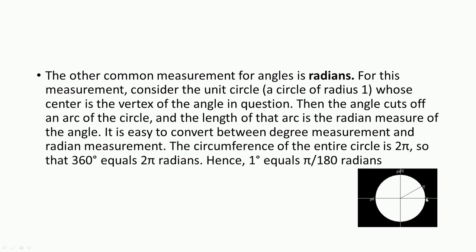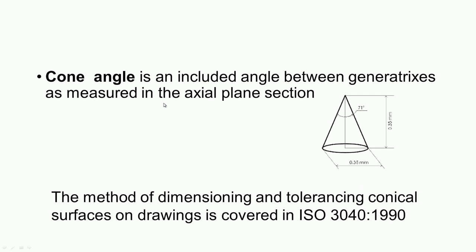For radian measurement, consider a unit circle — a circle of radius 1 unit whose center is the vertex of the angle in question. The angle cuts off an arc of the circle, and the length of that arc is the radian measure of the angle. The circumference of the entire circle is 2π, making conversion between degrees and radians straightforward.